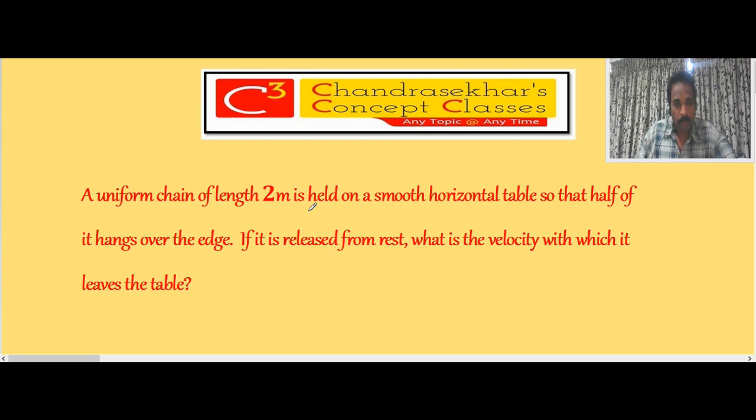A uniform chain of length 2 meters is held on a smooth horizontal table so that half of it hangs over the edge. If it is released from rest, what is the velocity with which it leaves the table?